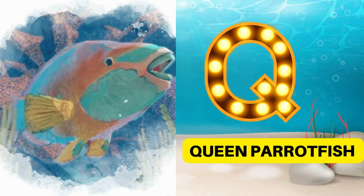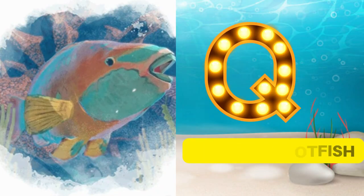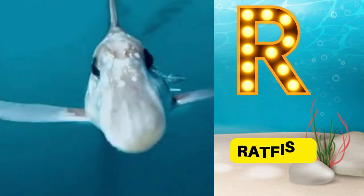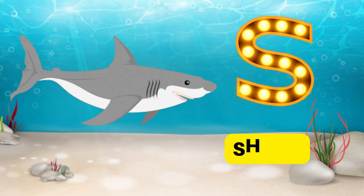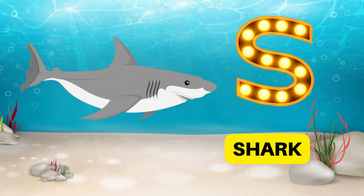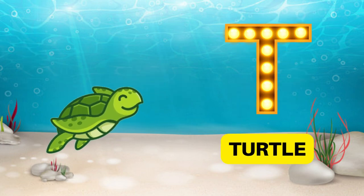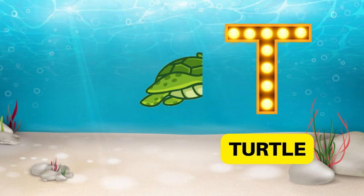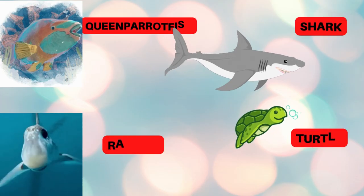Q is for queen parrotfish. Cuh cuh queen parrotfish. R is for ratfish. R r ratfish. S is for shark. Suh suh shark. T is for turtle. Tuh tuh turtle.